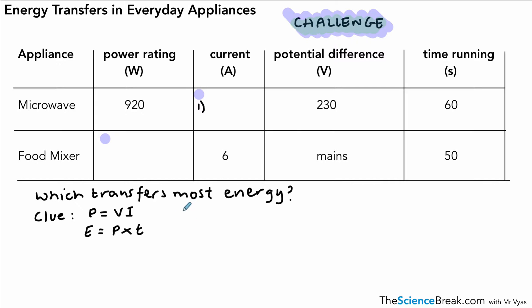For the first one here, for the current, for the microwave, we need to use this equation here, but we need to rearrange it. So the rearranging gives us I equals power divided by potential difference. And if we plug in the numbers from the table, the power is 920 watts, and the potential difference is 230 volts. If we do that calculation, we get a current of 4 amps.